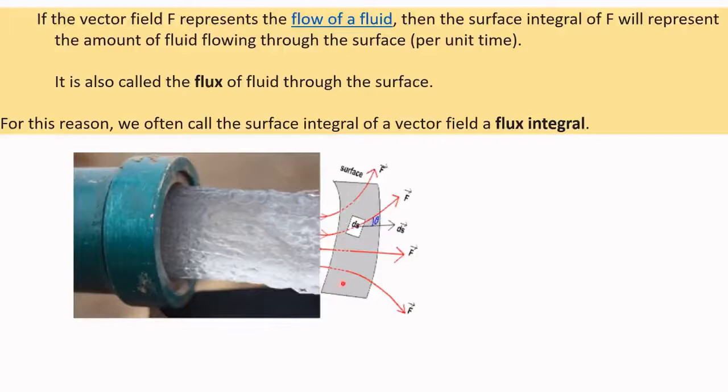With respect to this particular surface, we can consider this surface to be mounted on the output point, and it is also called the flux of the fluid through the surface.